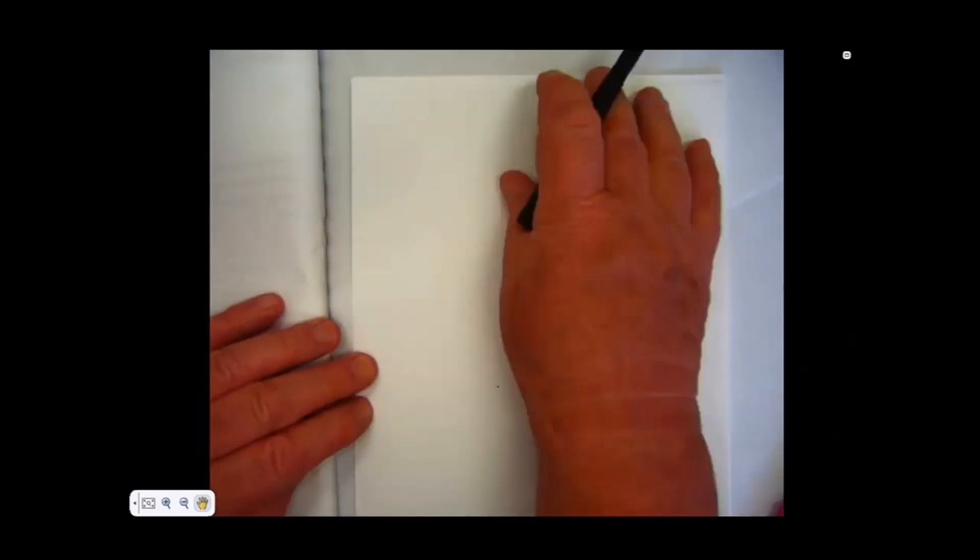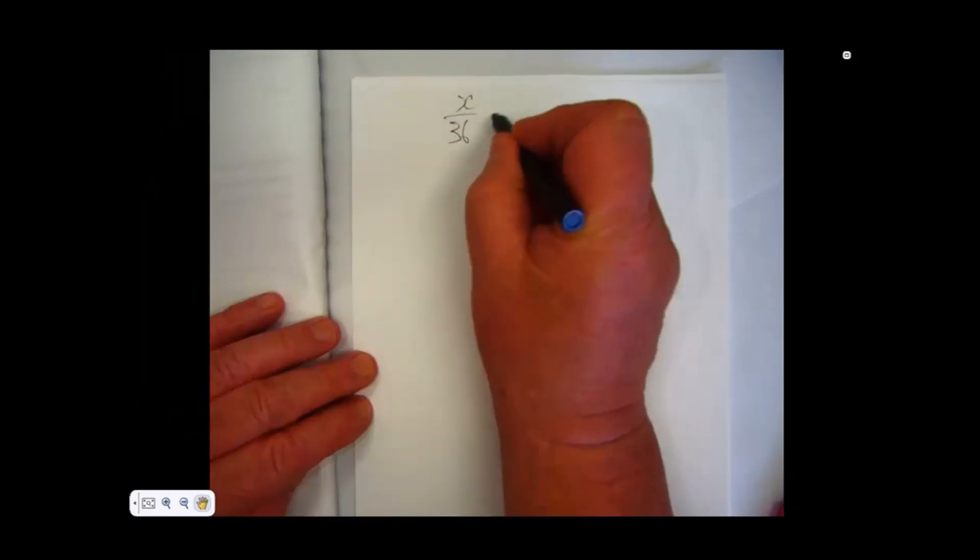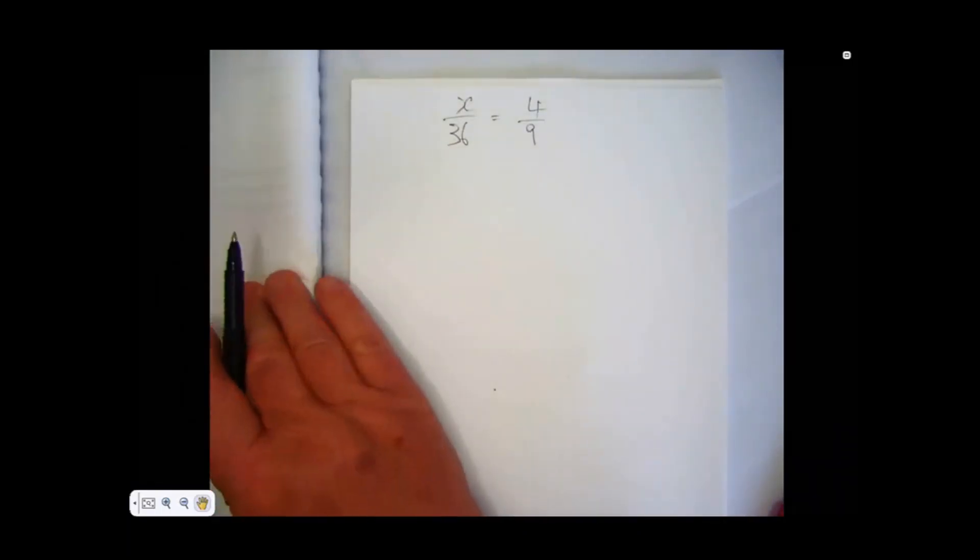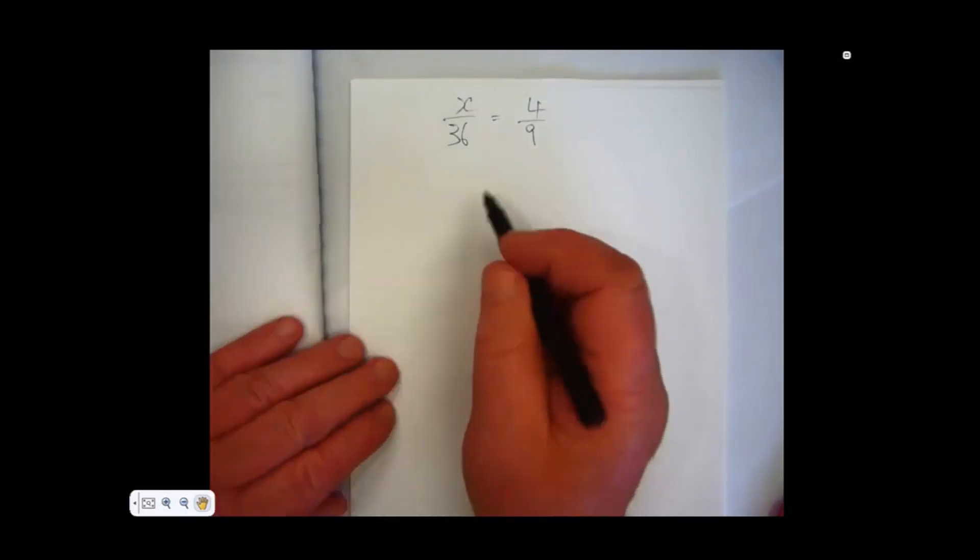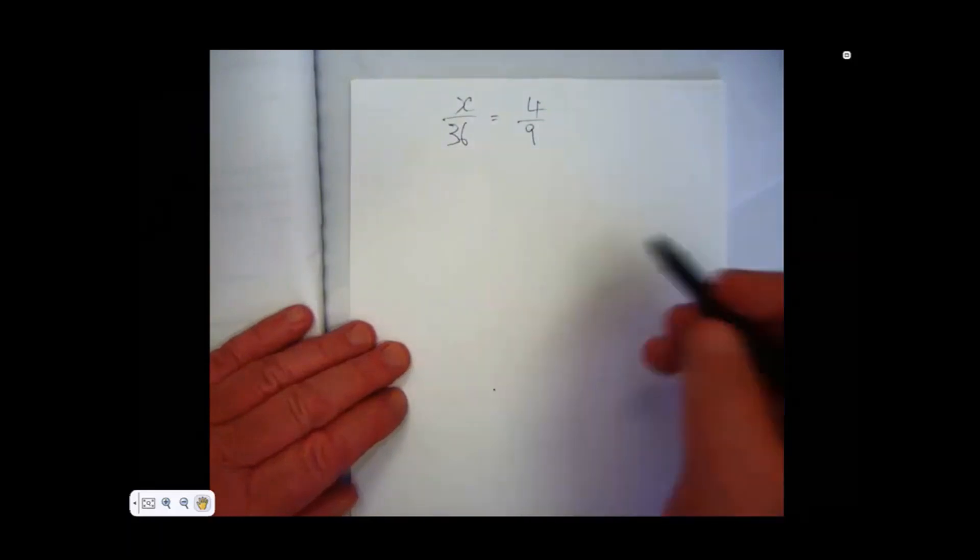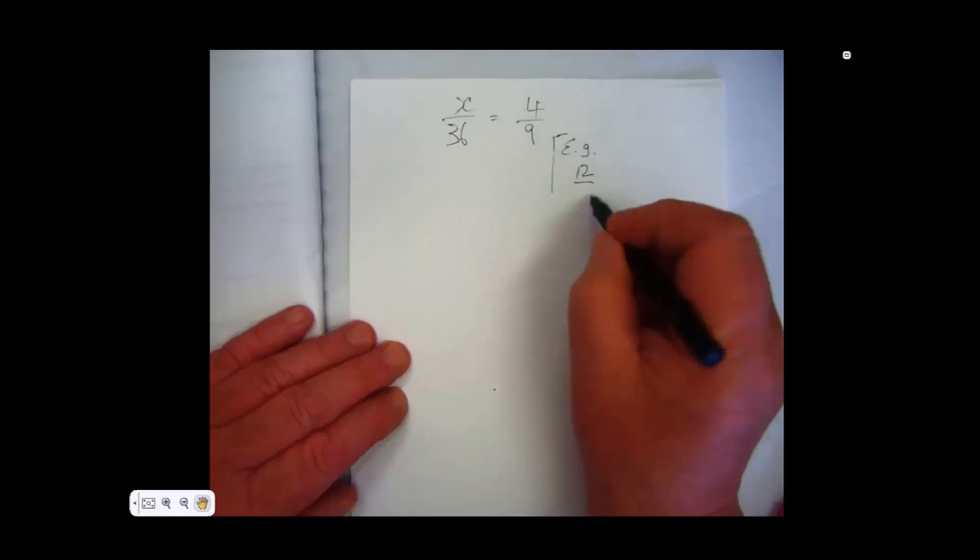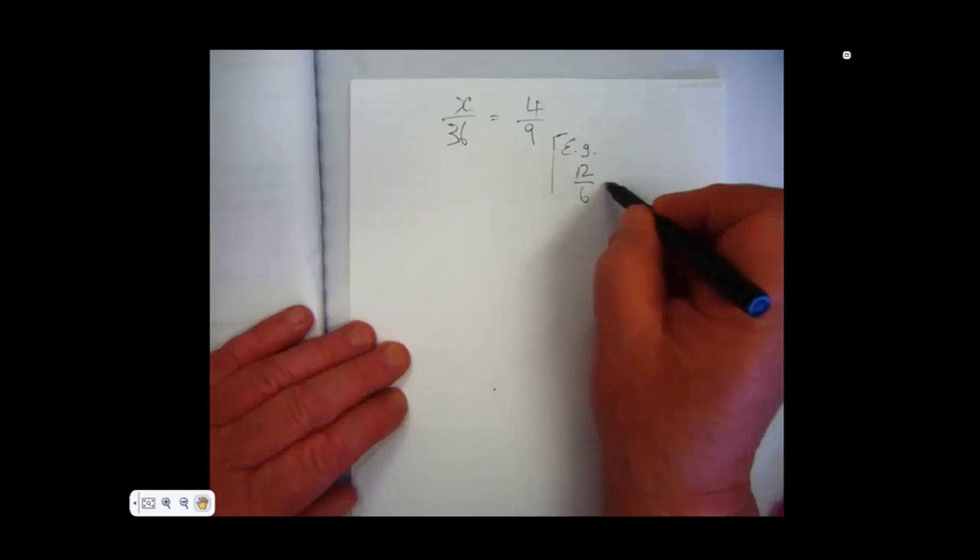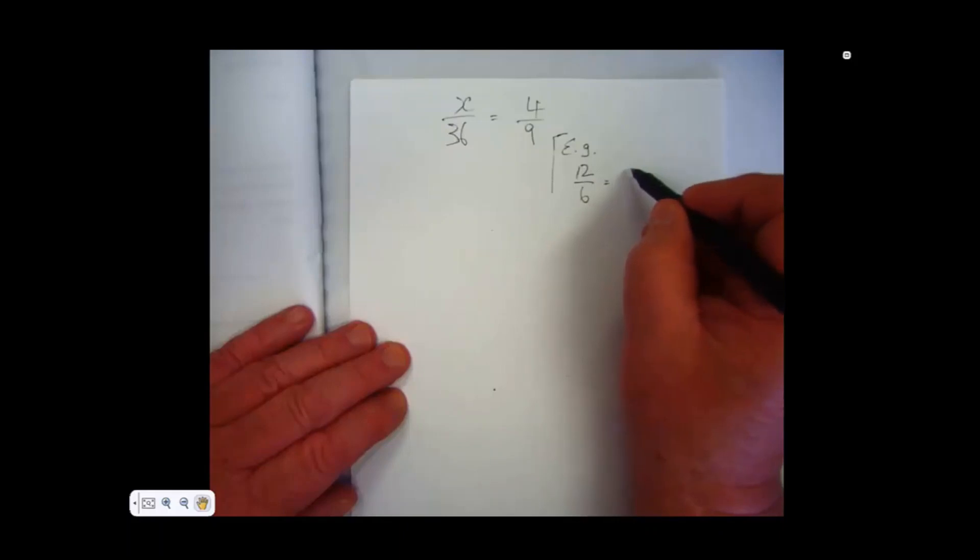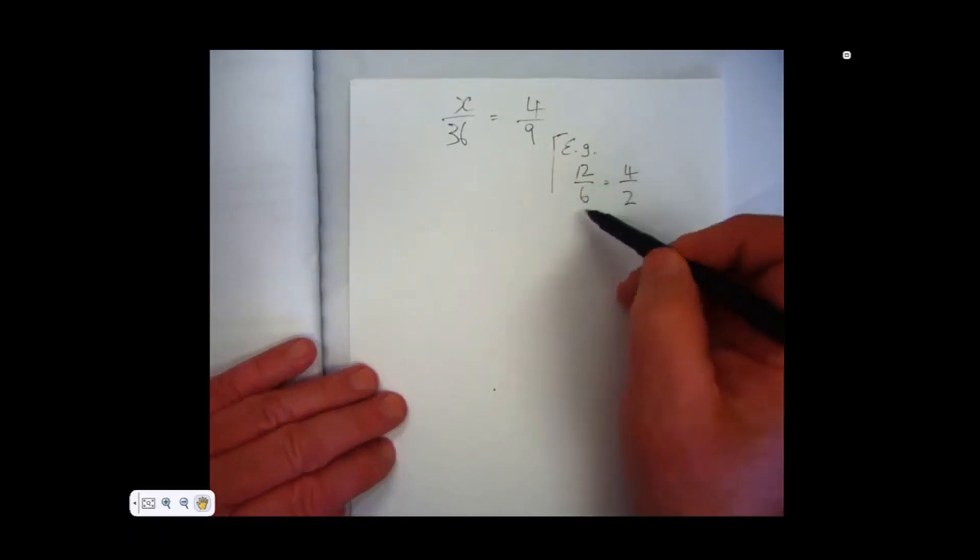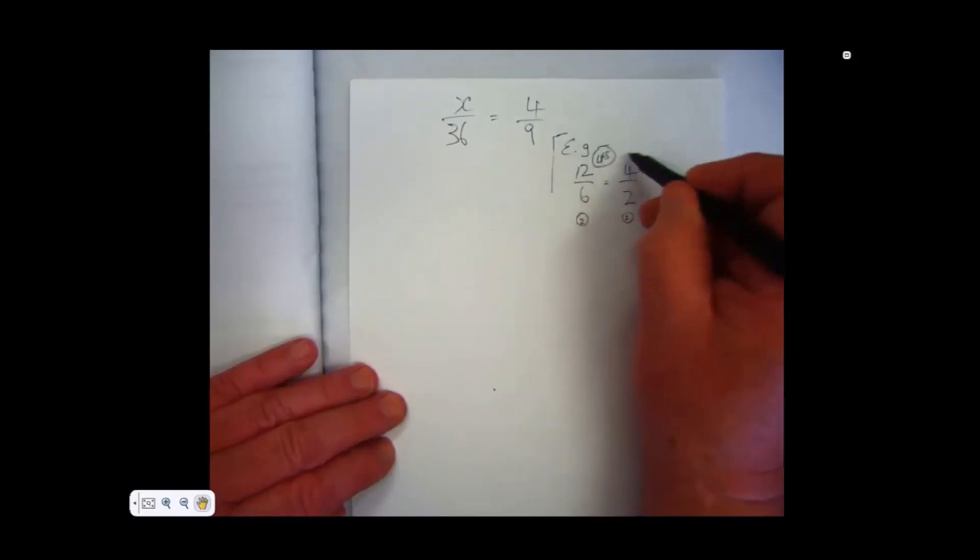Let's consider this example. You may have something like this, x divided by 36 equals 4 over 9. If you read in your book, the second line there says we can use a rule called the cross multiplication rule. Now, the cross multiplication rule is quite handy. Watch this. If I give you this. For example, 12 over 6 equals 4 over 2. Now, 12 over 6 gives us 2. The answer is 2. 4 over 2 also equals 2. So, the left-hand side of the equation equals the right-hand side. So, we start with something that is true anyway.